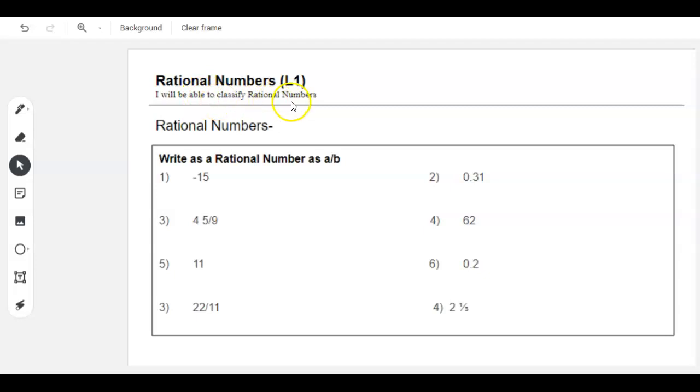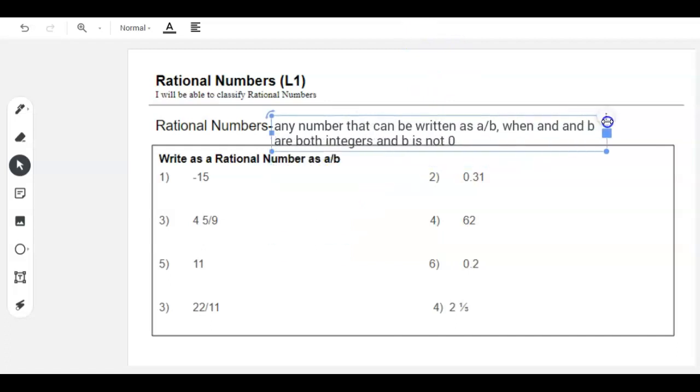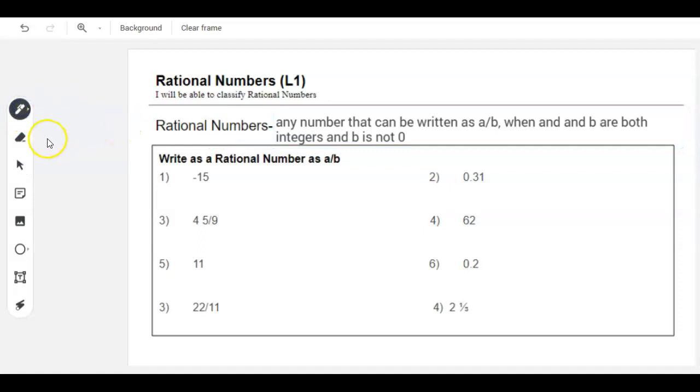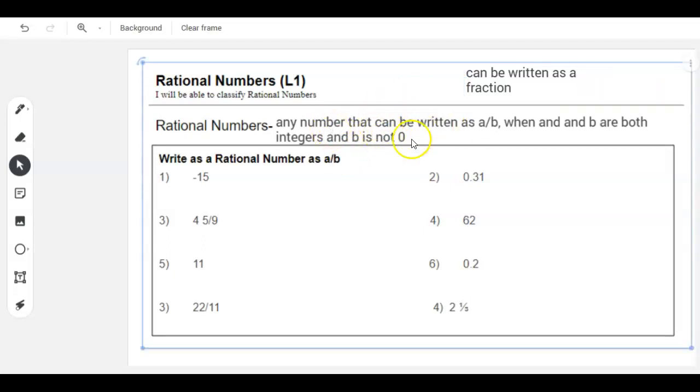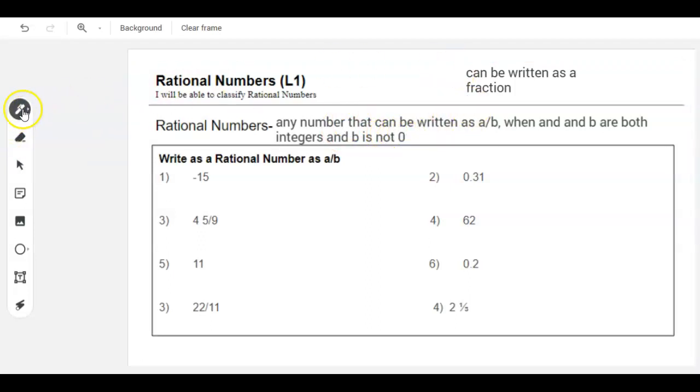So first thing is rational numbers. We're going to be able to classify them. A rational number is any number that can be written as a over b when a and b are both integers and b is not zero. So I know that's a really long definition, lots of weird stuff in there. So I'm going to give a simplified definition. Rational numbers can be written as a fraction. That's the short version. You do need both on your paper, because you need to understand how we would use it in math terminology.